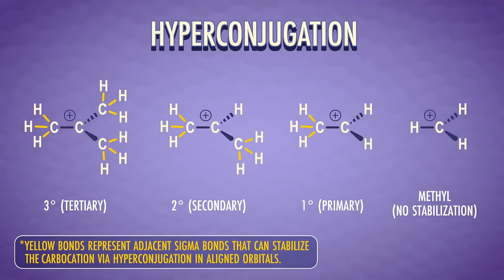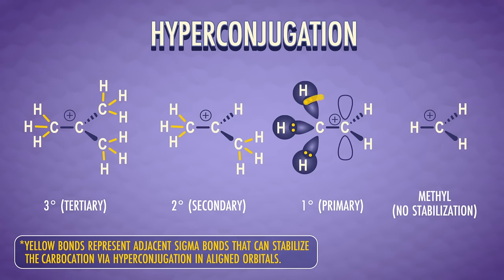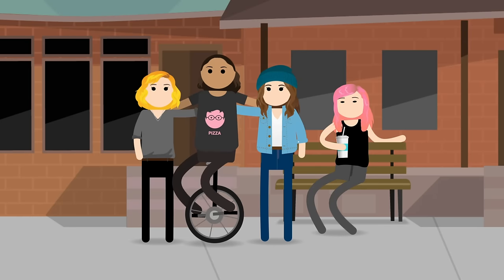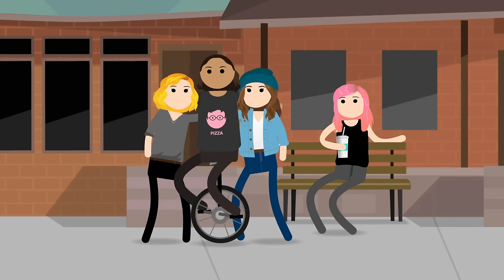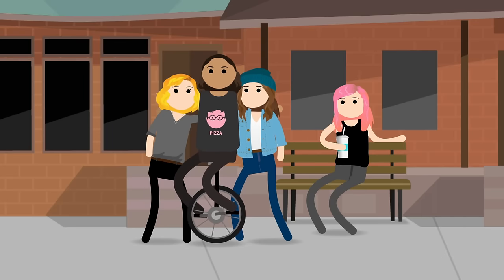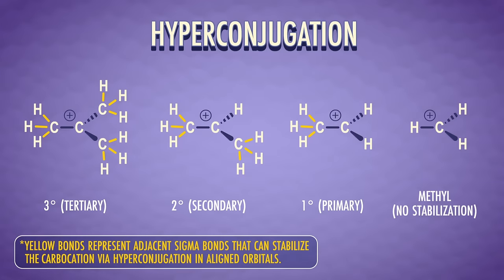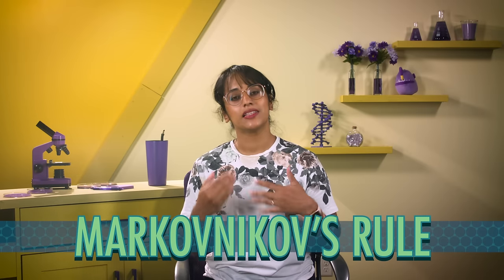Hyperconjugation is an even more spread out kind of stabilization, borrowing electron density from sigma bonds sideways from the positive charge. Additional carbon atoms have more sigma bonds that can stabilize the carbocation. So when you add a hydrogen halide to an alkene, the product will be formed from the most stable carbocation. This pattern is called Markovnikov's Rule. In these reactions, the proton will add to the side of the double bond that has the most hydrogens, meaning the positively charged carbon will be connected to more sp3 carbons — more substituted and therefore the more stable of the two possible carbocations.